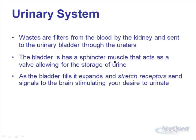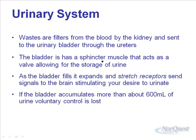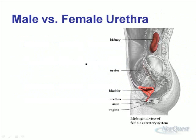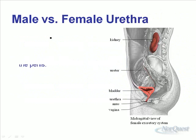As the bladder fills, it expands and stretch receptors send a message to our brain telling us it's time to urinate. If the bladder accumulates more than about 600 milliliters of urine, voluntary control is lost and we will end up urinating regardless. It's either that or having your bladder explode, which is not good because all that urine spreads throughout your abdominal cavity and it's full of waste material.